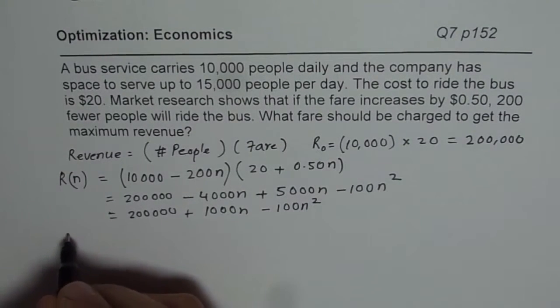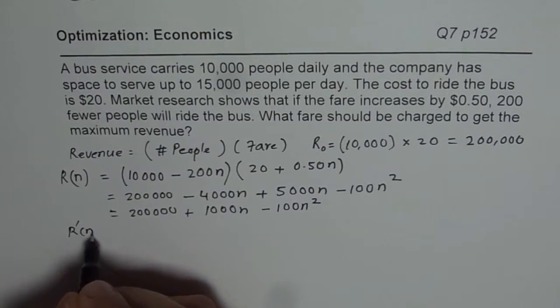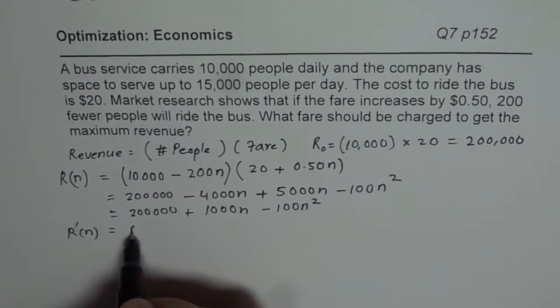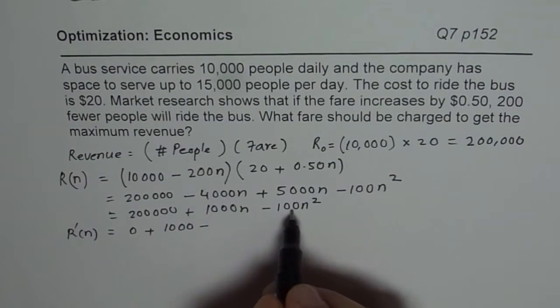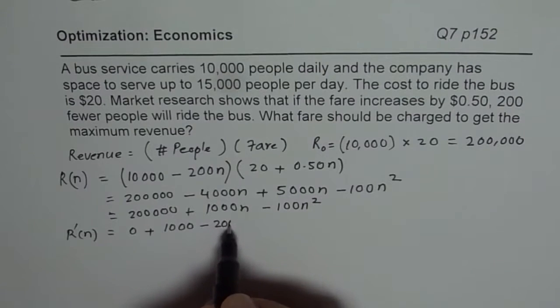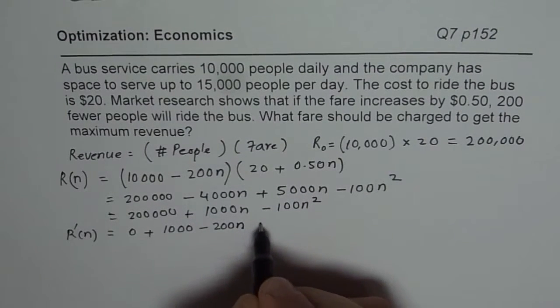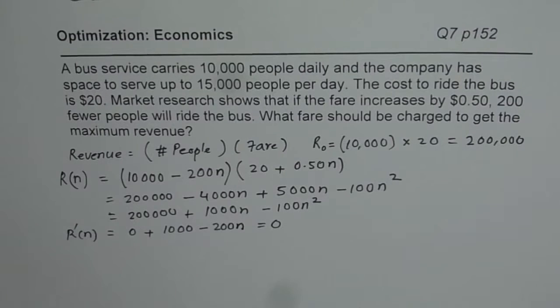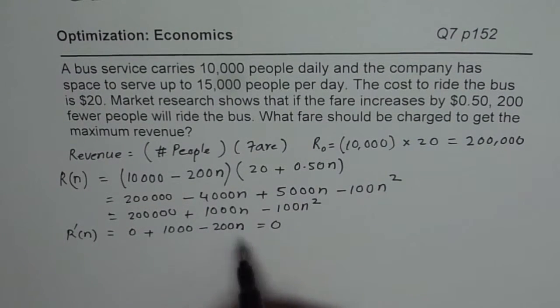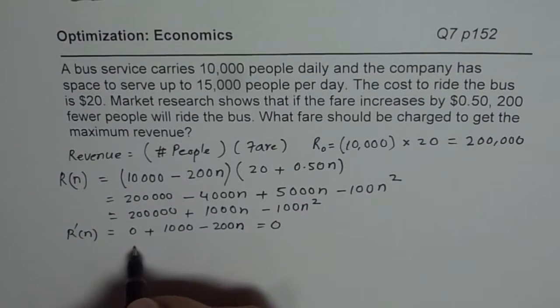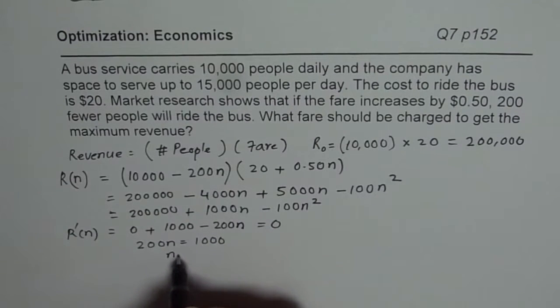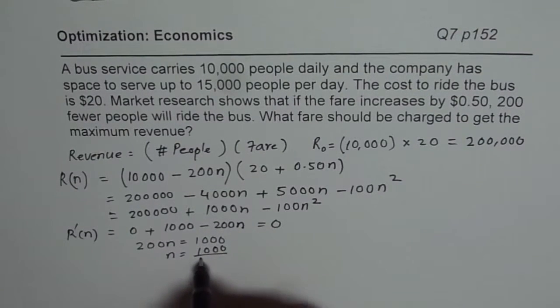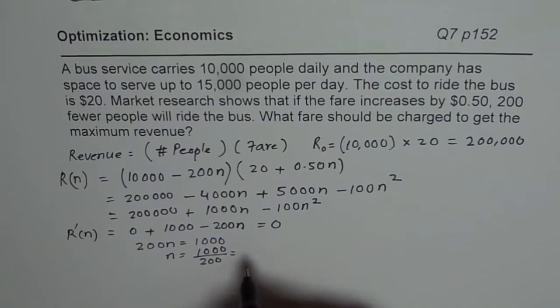Now derivative will give us the rate of change of revenue. So the derivative for this is a constant will be 0, plus 1,000, minus 200N. Now this derivative equated to 0 will give us the critical number. Solving 1,000 should be equals to 200N. So we have from here, 200N equals to 1,000. That means N equals to 1,000 divided by 200, which is 5.